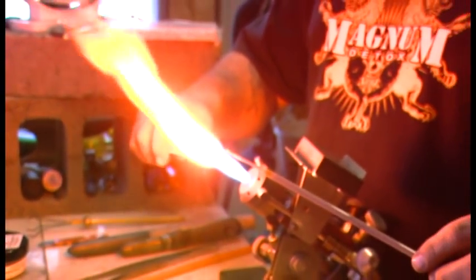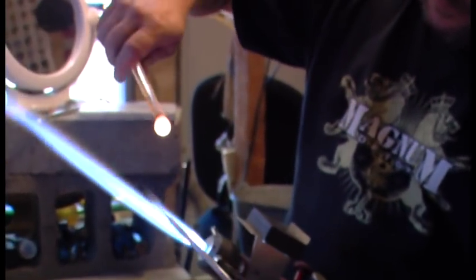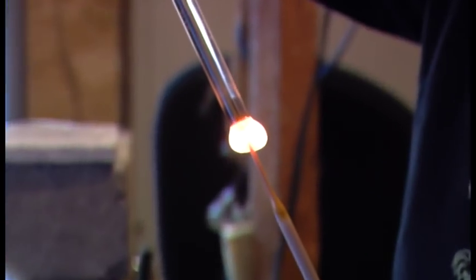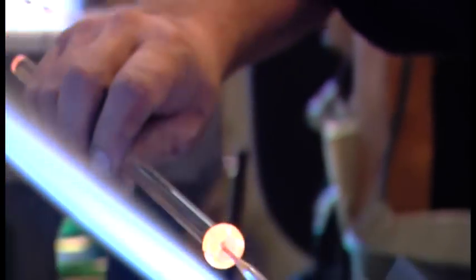Once the rod has reached the desired temperature, Dan takes a colored glass rod and inserts it into the heated up 12 millimeter rod. The combining of the heat and the cold create an explosion-like effect, making the mushroom shape inside the bead.